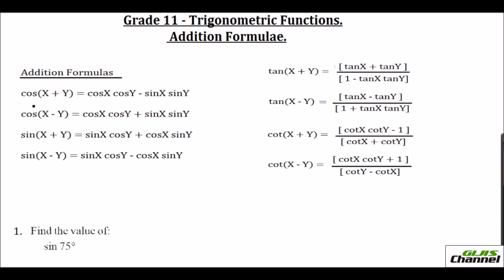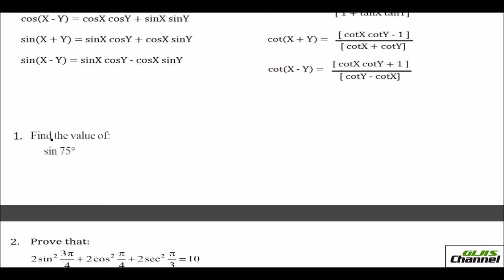So these are the addition formulae. Let us see how these are used in problems. The first problem is: find the value of sin 75°. We know the special angles like 0°, 30°, 45°, 60°, 90°, but we don't know exactly what 75° is. You can write sin 75° as sin(45° + 30°), because we know the values of 45° and 30°.